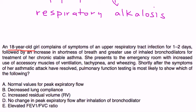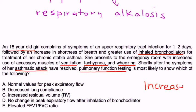Clinical vignette one: An 18-year-old girl with chronic stable asthma presents to the ER with increased use of accessory muscles, tachypnea, and wheezing after an upper respiratory infection. Shortly after her asthma attack resolves, PFT testing is done. This most likely shows increased residual volume — because a person with asthma can't exhale maximally due to bronchoconstriction and air is trapped in the lungs, increasing RV. The answer is choice C.